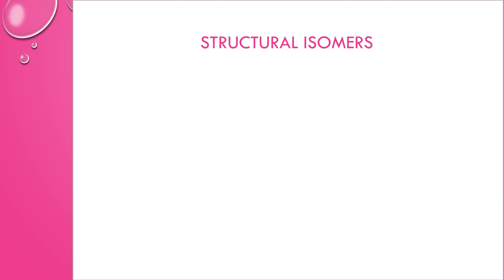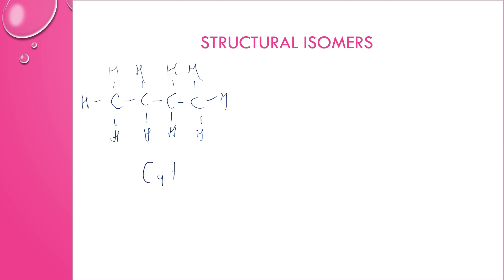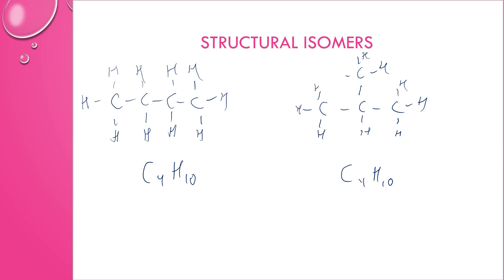Their atoms are connected in a different way. So if you have something like butane, drawn in a straight line, butane's molecular formula is C4H10. You can have another molecule that's also C4H10, where the carbons are connected in a different way and filled in with hydrogens — it's still 10 hydrogens. This second one is 2-methylpropane, because the main chain is three carbons with a single carbon off the second position. So those are structural isomers.